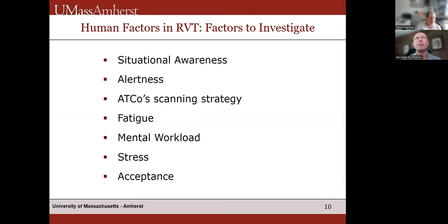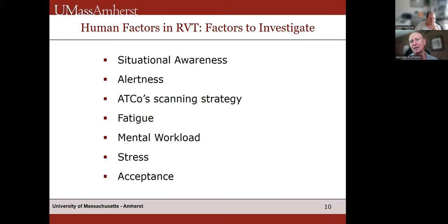The human factors you'd want to investigate in remote and virtual tower research include situational awareness — how well air traffic controllers see and track all kinds of traffic and approaching aircraft. Other factors include alertness to different kinds of events, scanning strategy (how a controller looks at the window to locate and identify an aircraft they are going to control), and the level of fatigue, mental workload, stress, and acceptance.